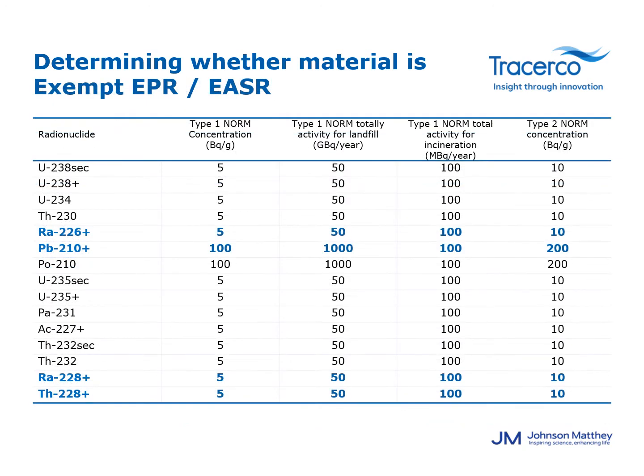If following the in or out of scope summation the waste is considered to be in scope, i.e. radioactive, applying the summation rule with the values for exemption allows us to determine whether the waste is exempt as type 1 or type 2 NORM. Exempt waste is radioactive but a permit may not be required for disposal. It is likely to be less costly to dispose of this type of waste than non-exempt waste. It should be noted that exempt waste cannot be disposed of to sea.